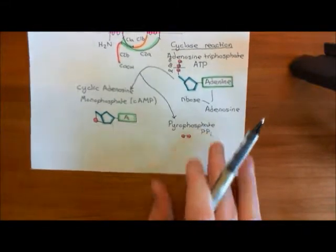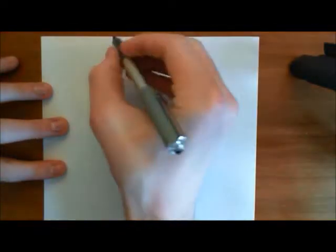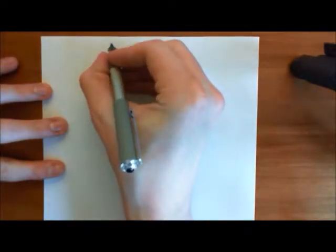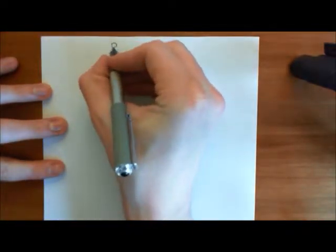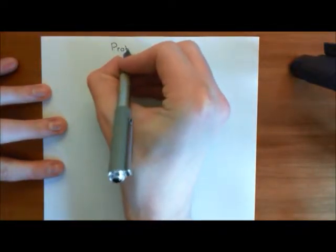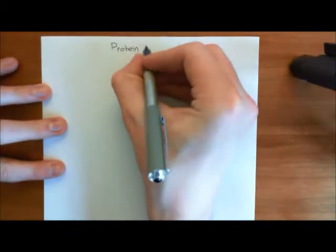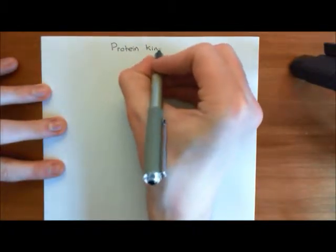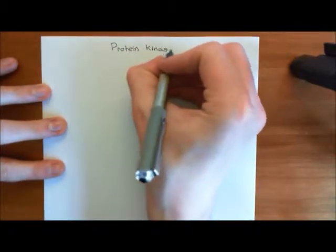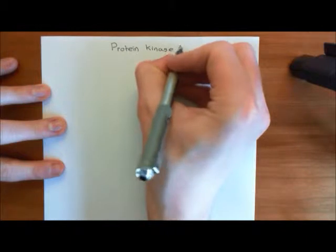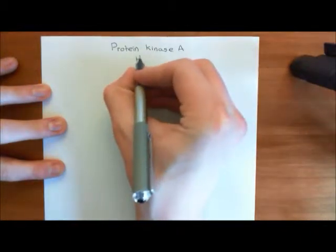We're going to start off with a discussion of the structure of a protein kinase A holoenzyme, because protein kinase A is not just one protein — it's made up of multiple proteins. When you have an enzyme that's made up of multiple proteins like so, it's called a holoenzyme.